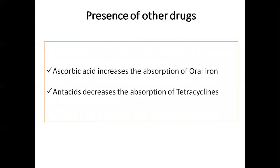Next is the presence of other drugs. When more than one drug is prescribed, there is a possibility of one drug changing the absorption of another. For example, ascorbic acid increases the absorption of oral iron, so the dose must be considered. On the other hand, antacids decrease the absorption of tetracycline, so the dose of tetracycline may need to be increased. Some drugs increase and others decrease the absorption of co-administered drugs.